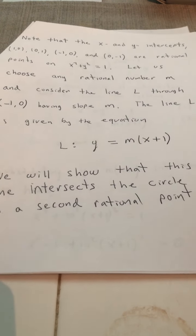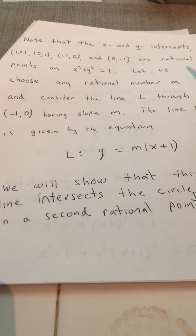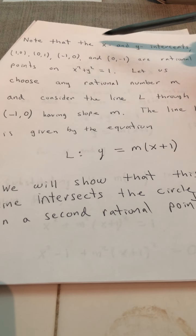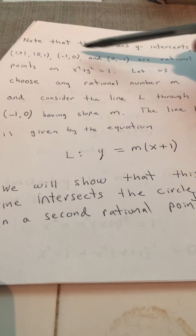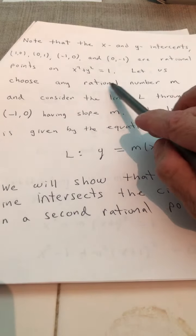So we want to find a way to generate these rational points. So some of them we already know. The x and y-intercepts, for example, the x and y-intercepts on the unit circle are given by these four ordered pairs. They, of course, are rational points.